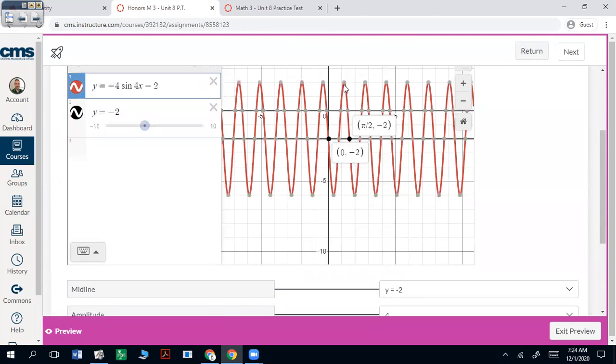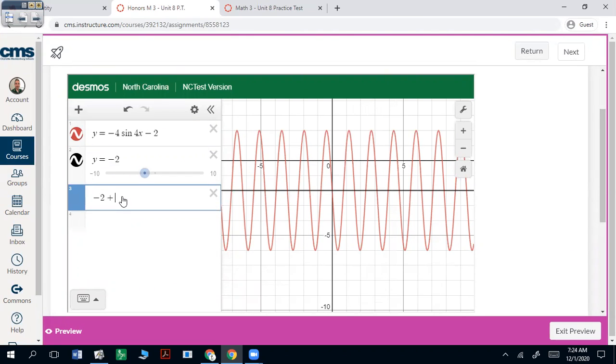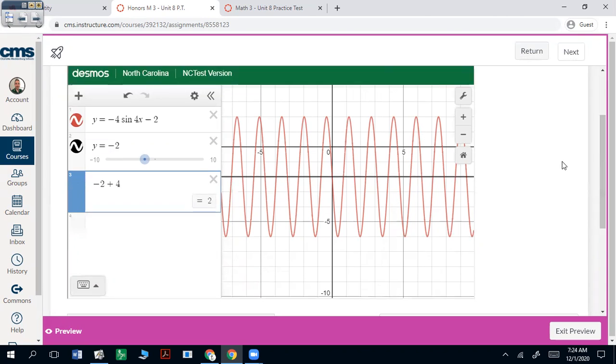All right, your maximum. You can get that from here. That's going to be 2. You can also just do negative 2 plus 4, your midline plus your amplitude. And that's your maximum.